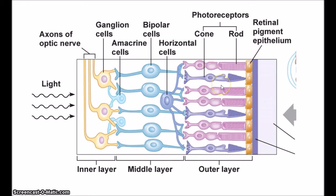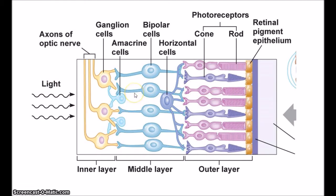The only cells that are directly sensitive to light are the photoreceptors, and these are at the bottom. Interestingly, the retina is actually inside out — light has to come in and travel through all of these other cells before hitting the photoreceptors. This doesn't cause too many problems because the cells are transparent, so light goes through pretty quickly.